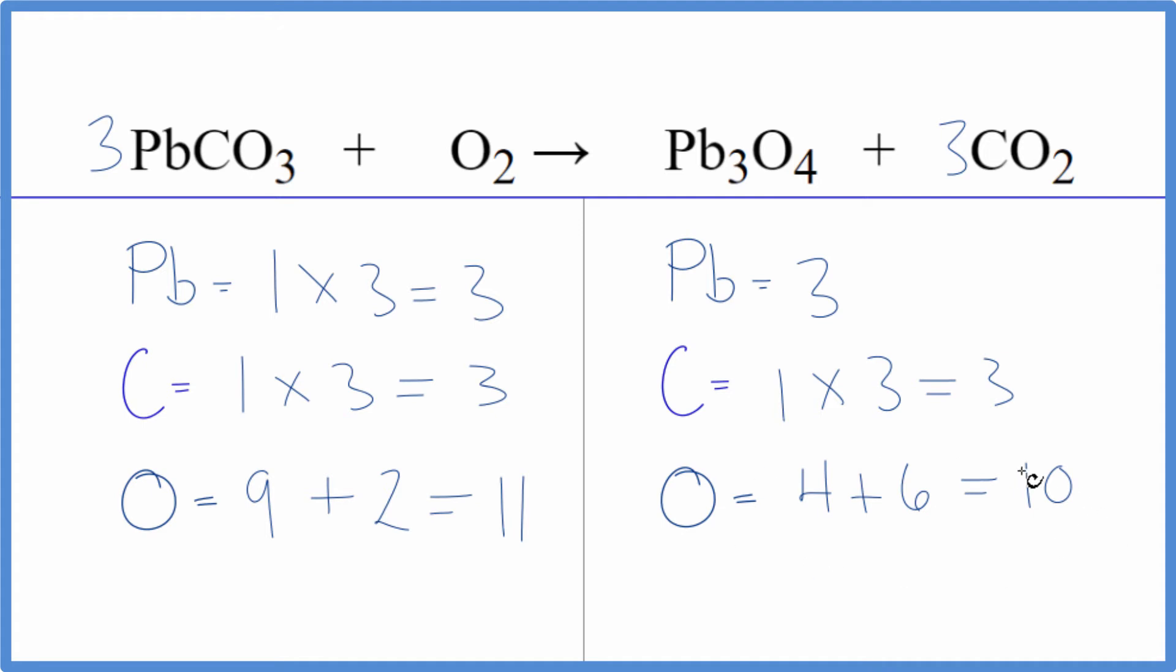One option is to try to increase the size of this number here by multiplying one of these substances by 2 and see how that works out. Kind of a sneaky way to do it is to multiply this O2 by 1 half. So we're just cutting this in half. And here's what happens.